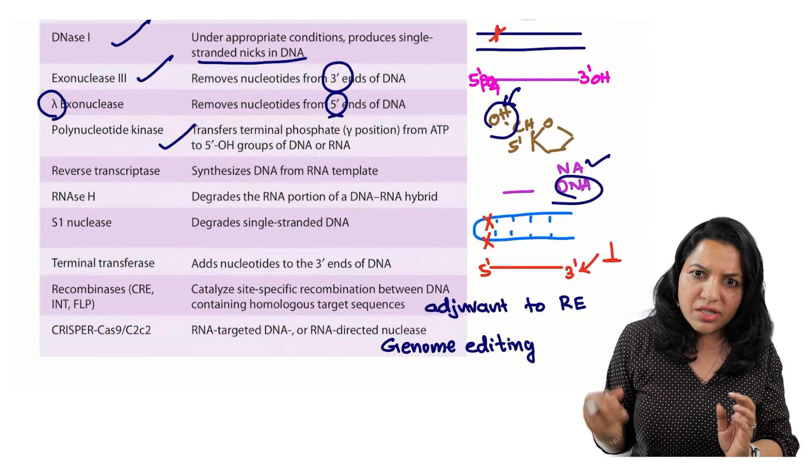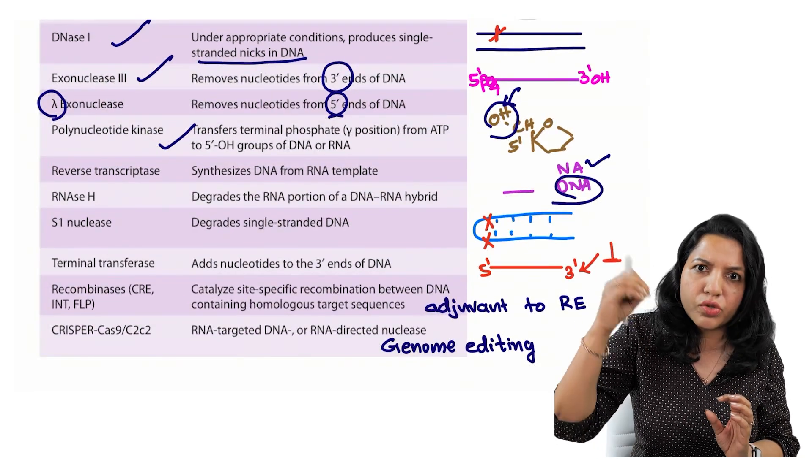Then terminal transferase. Terminal transferase is very simple. It adds nucleotides to the 3 prime end.